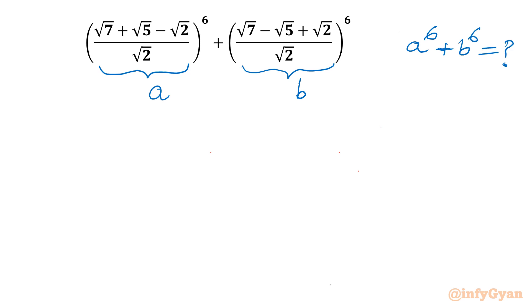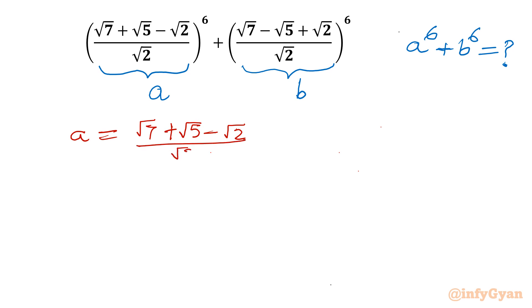Now I will write a and b. So a is equal to (√7 + √5 - √2) divided by √2. And b is (√7 - (√5 - √2)) divided by √2.